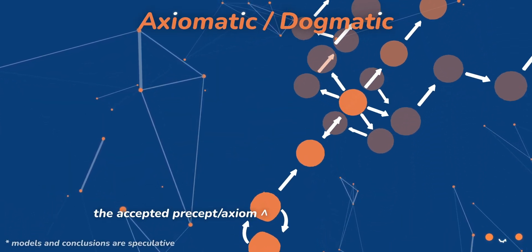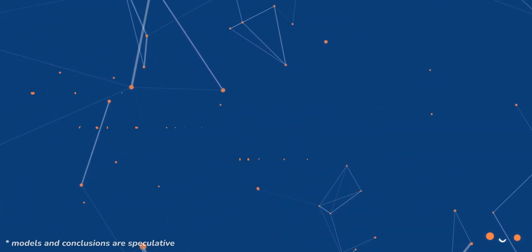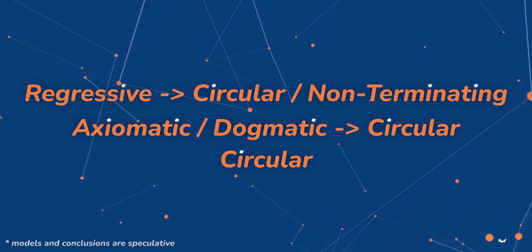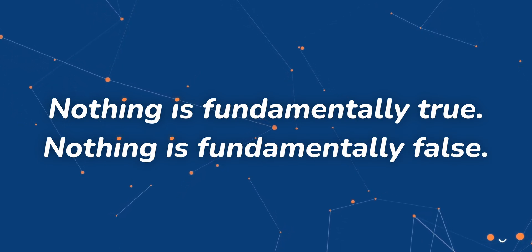I argue that those accepted precepts fall under the circular argument, given that axioms are asserted. To reiterate, all attempts to prove that something is true must end with one of these three arguments. That's a big deal. Seemingly, nothing is true. Nothing can be true.